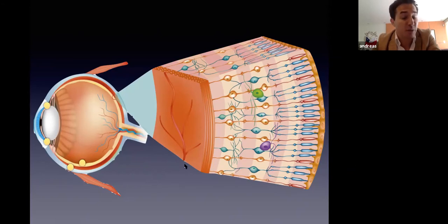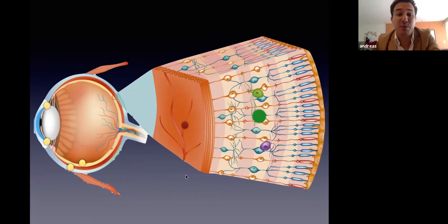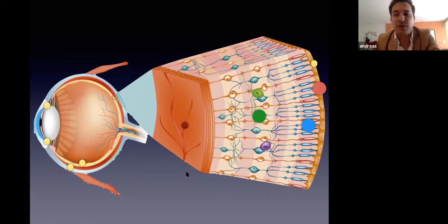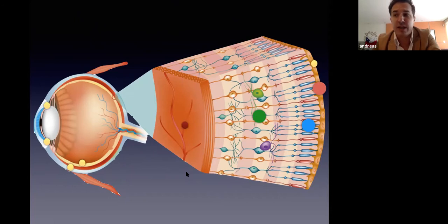Macular xanthophil is located in the plexiform layers of the retina, especially near the macular region. Rhodopsin and cone photopigments are located in the photoreceptor layer. Lipofuscin is located primarily in the retinal pigment epithelium. These pigments are of major importance in the absorption of light in the retina from both a physiologic and pathologic standpoint.